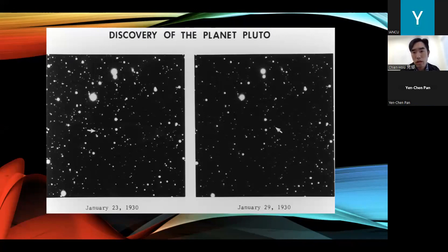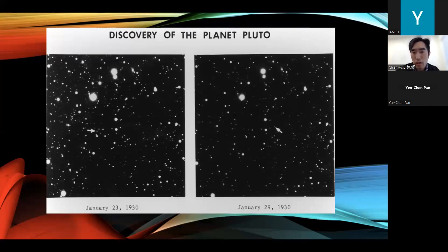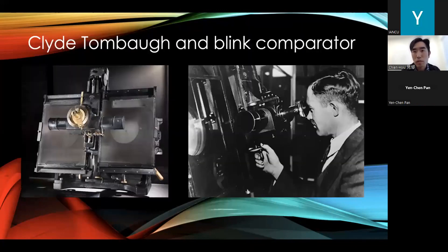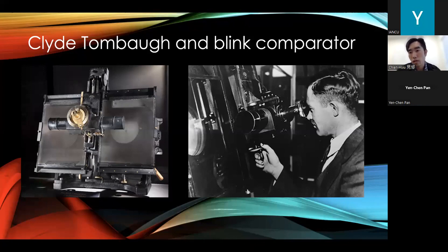The plates were taken on different nights — the left-hand side is the earlier date, and the right-hand side is the later date. If you look closely, there are two arrows pointing to Pluto, and that's how he made the discovery — by blinking between the two images. There was a machine called a Blink Comparator: you could put two different photo plates in its two slots and switch back and forth between them. That's how Clyde Tombaugh was able to discover this moving object and identify it as Pluto.